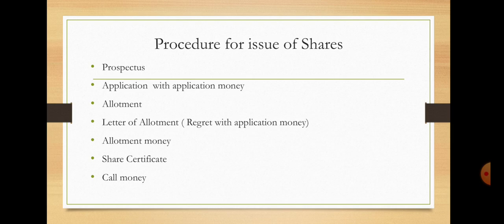The issue of shares begins with the prospectus, which should be issued first. In this prospectus, they have mentioned the number of shares issued, the minimum subscription of this issue, the maximum subscription, and then the preliminary expenses of these issues. Each application for shares must be accompanied by the prescribed application money.